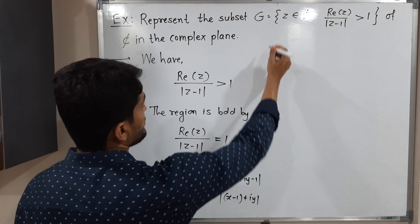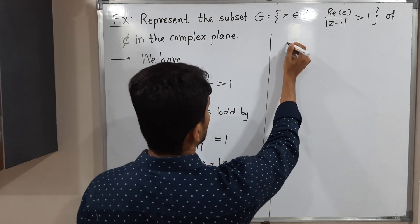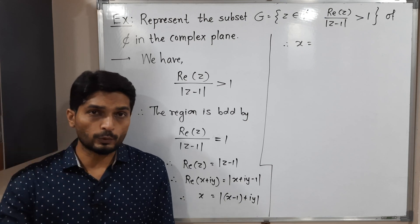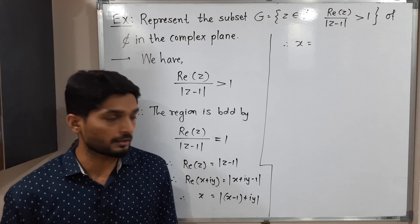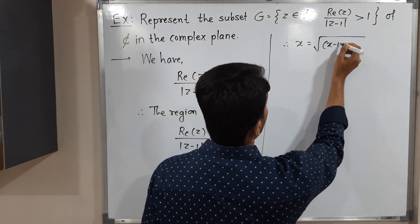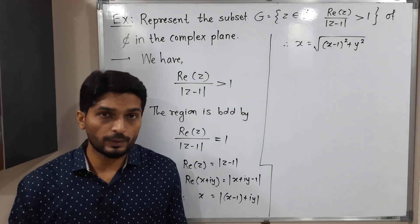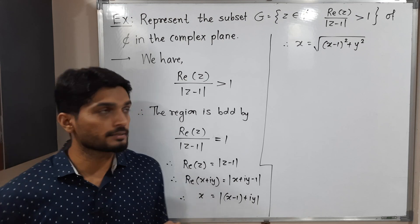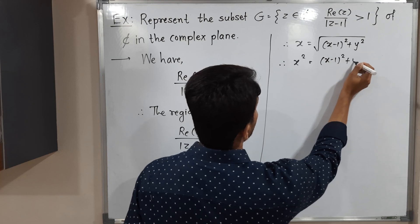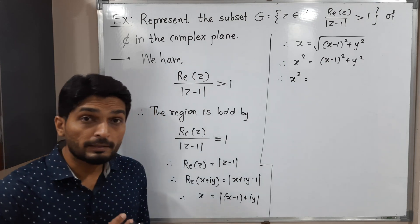So we have x equals the square root of (x minus one) squared plus y squared, using the definition of modulus as the square root of the sum of squares of real and imaginary parts. To remove the square root, I square both sides, giving x squared equals (x minus one) squared plus y squared.